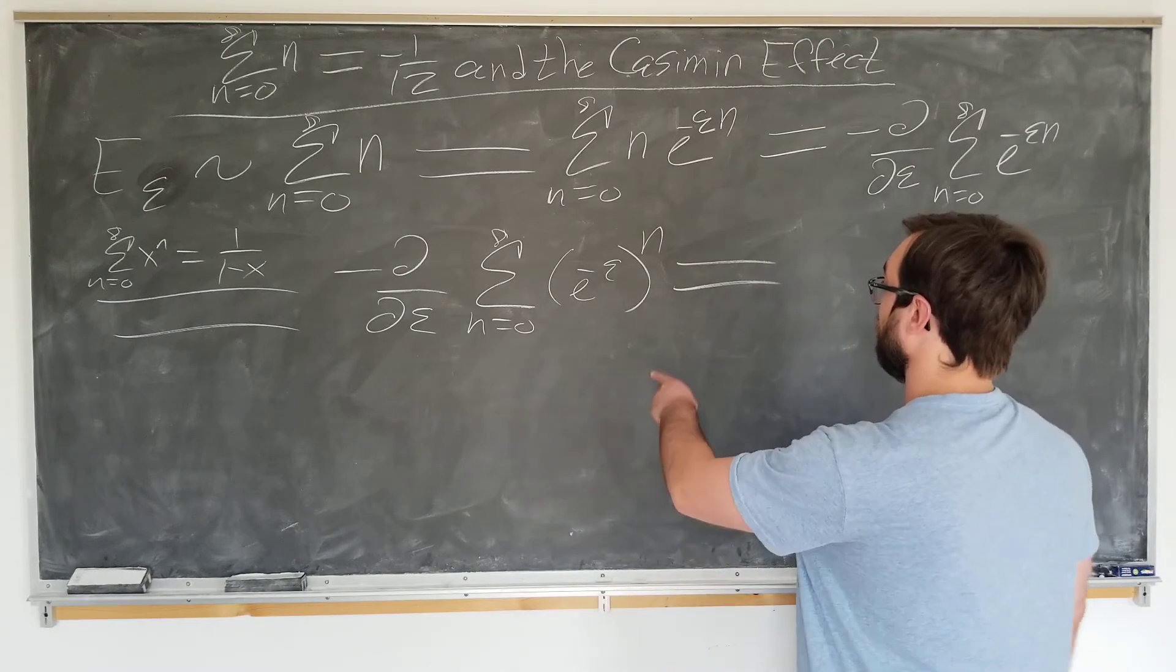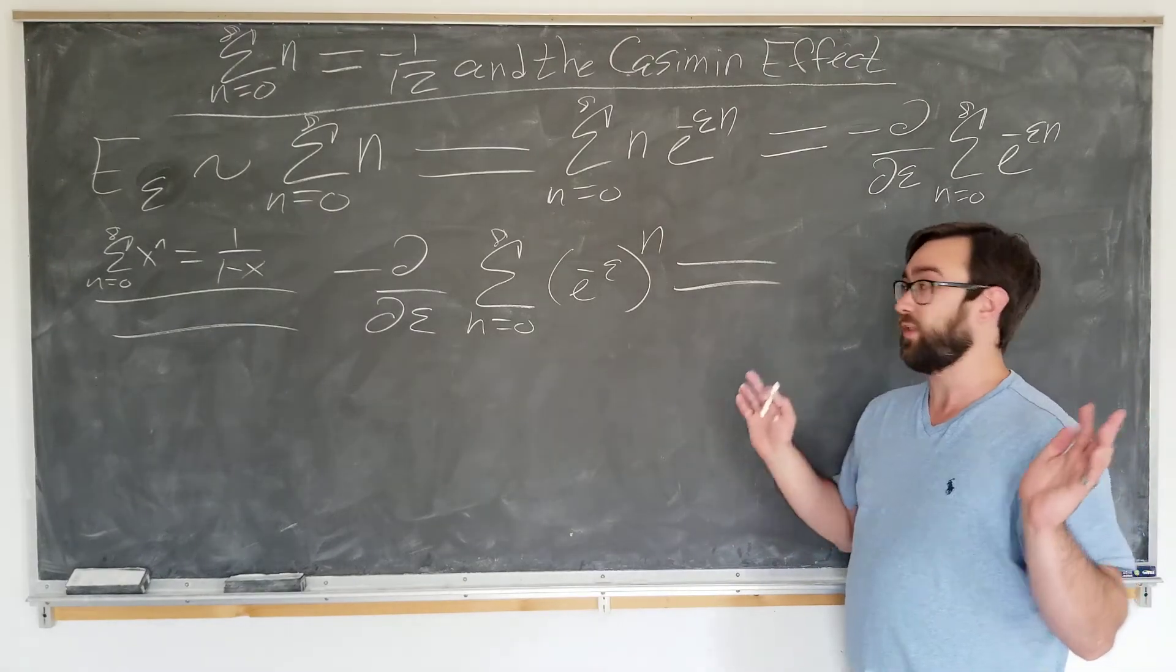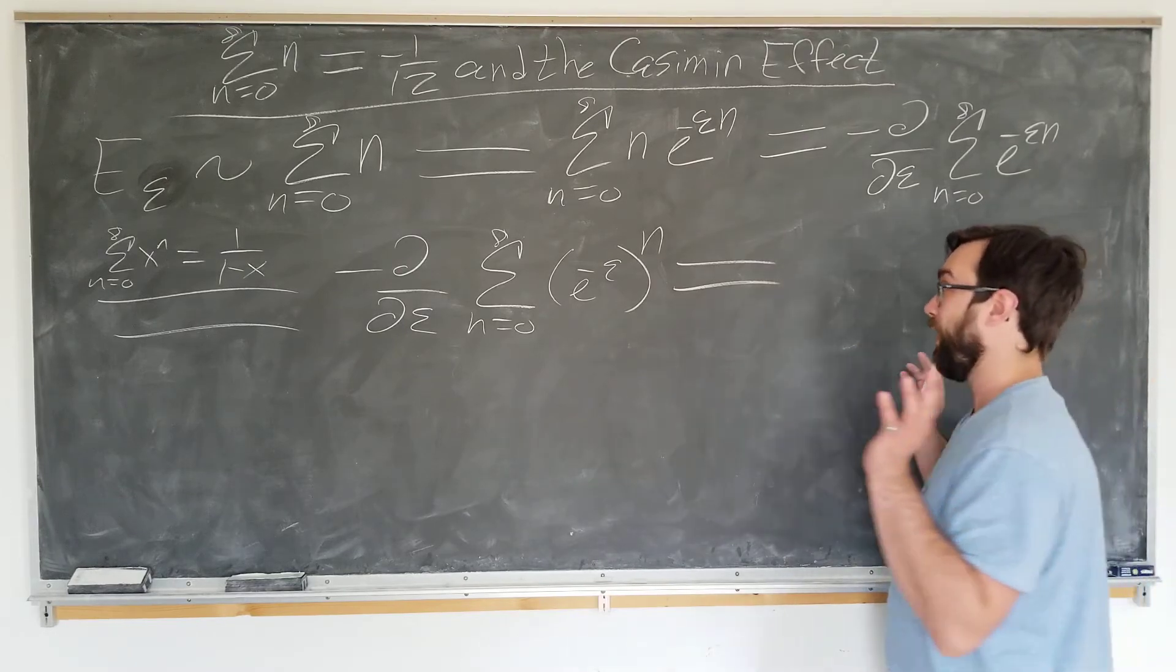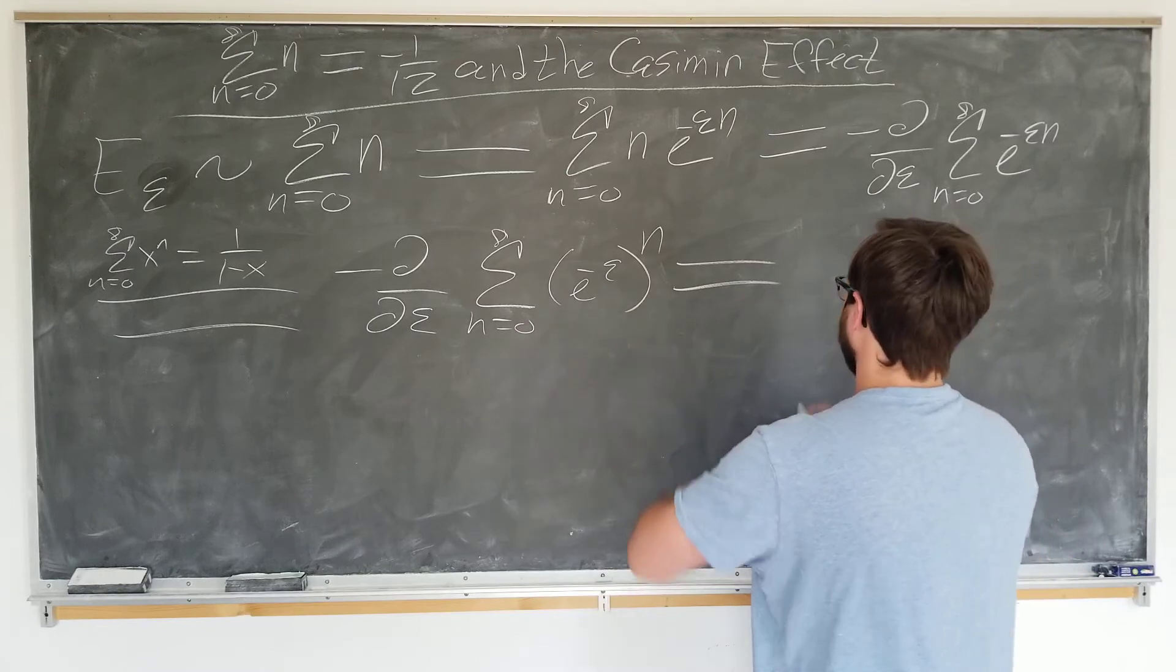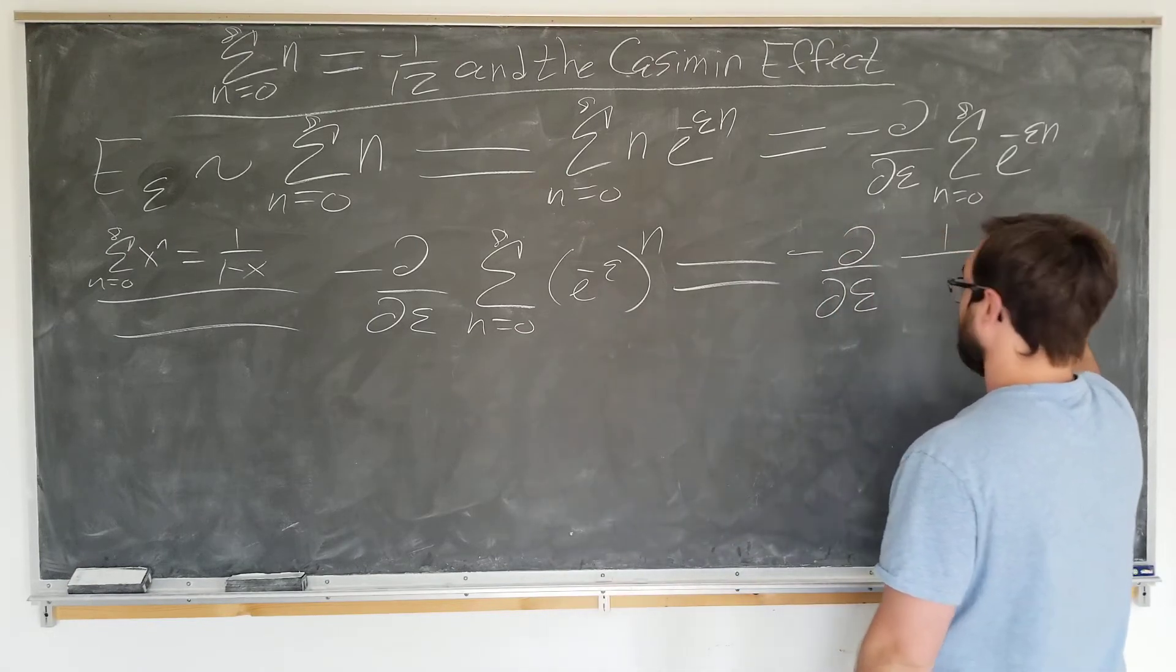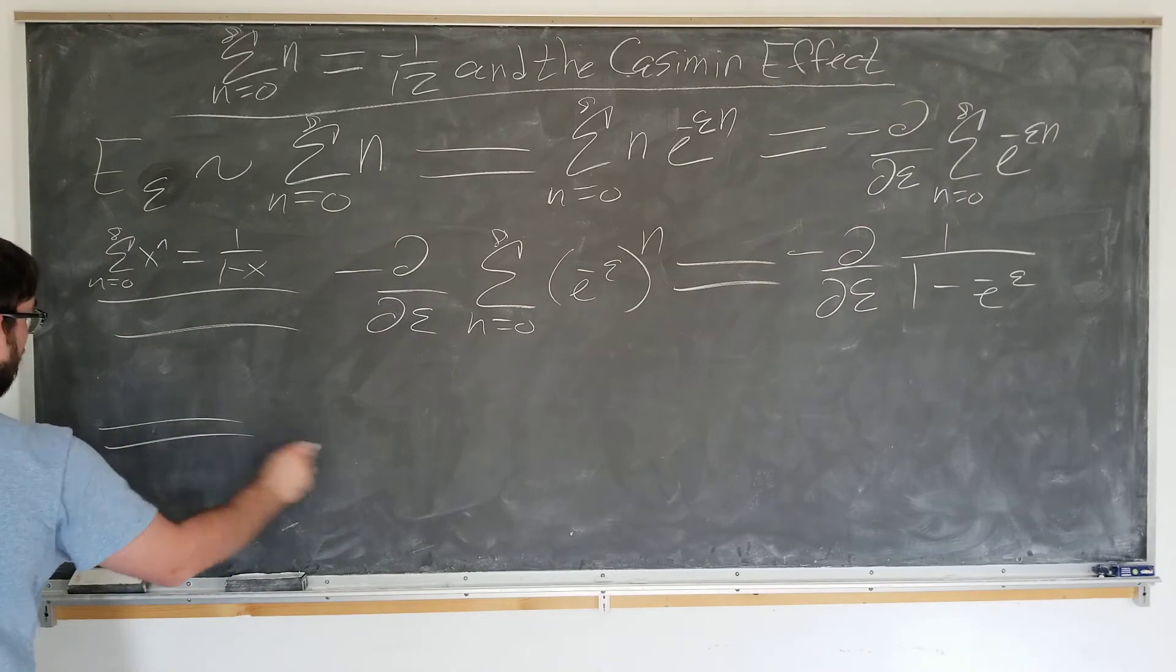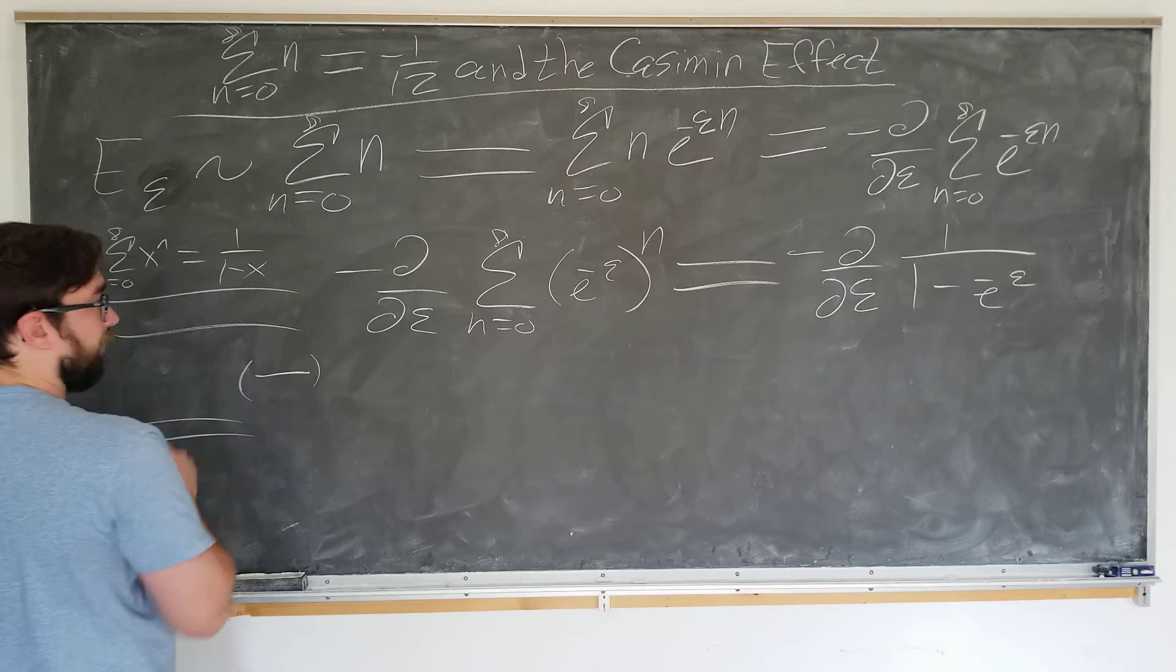Yeah, should be okay. Even if it doesn't, we don't really care, because we're physicists, we just use the formulas and see if it compares to experimental predictions. So, alright, now we'll write this as epsilon derivative of one minus e to the minus epsilon. Got to keep track of these pesky minus signs here.